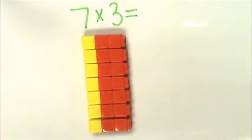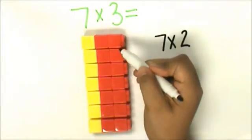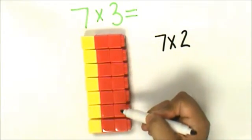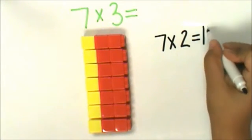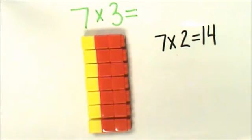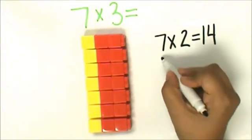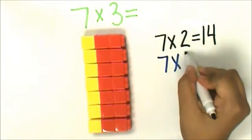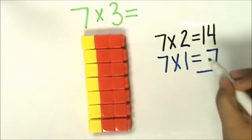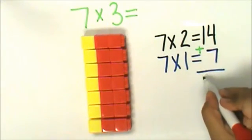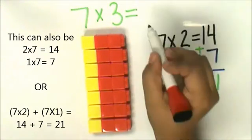Now you have 7 groups of 2—1, 2, 3, 4, 5, 6, 7. And I know that 7 times 2 is 14. And you have one group of 7, and that is 7. I can add 7 and 14 to get my answer. The product of 7 times 3 is 21.